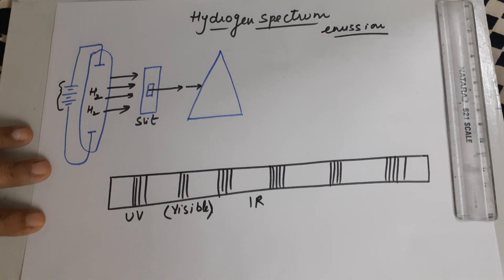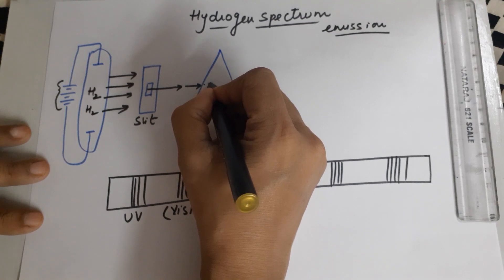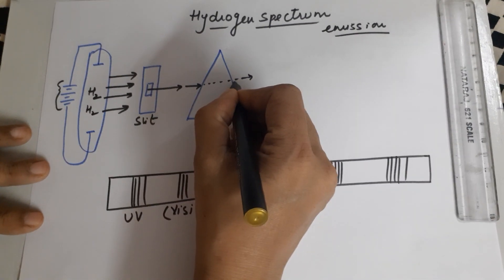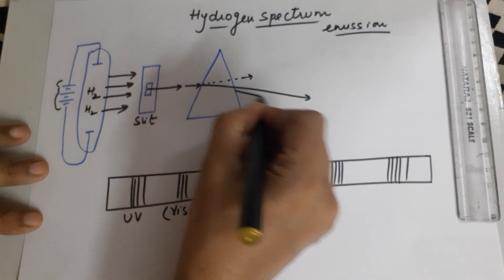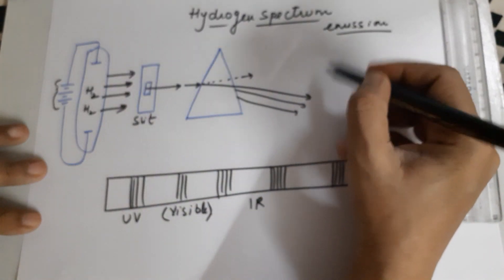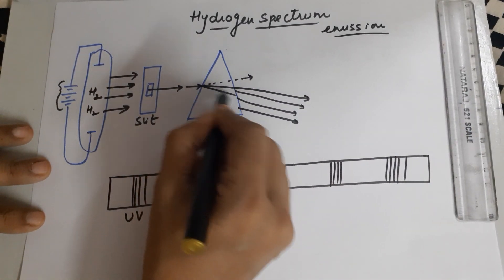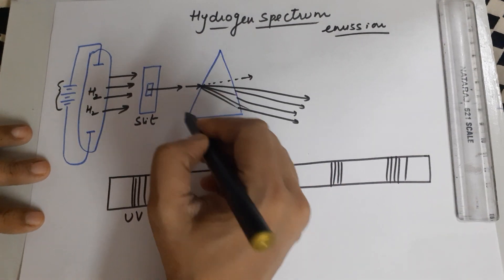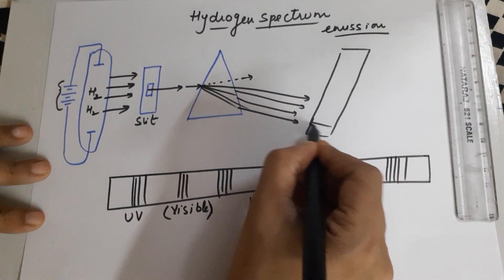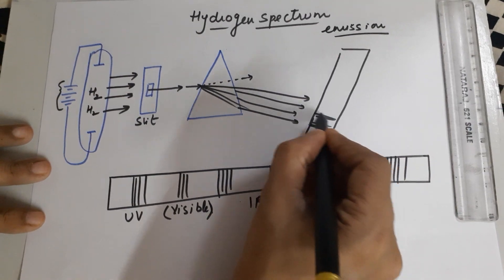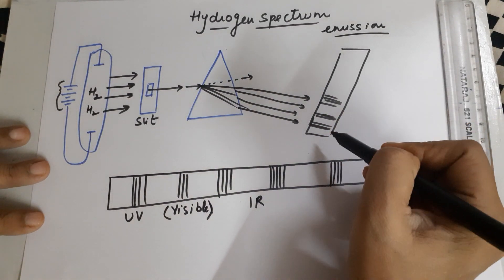The function of the prism is refraction or dispersion, which causes the components of light to be separated. You observe a deflection and get the components. The lights falling from the prism are then taken onto a photographic film, and these lines are your hydrogen spectrum.